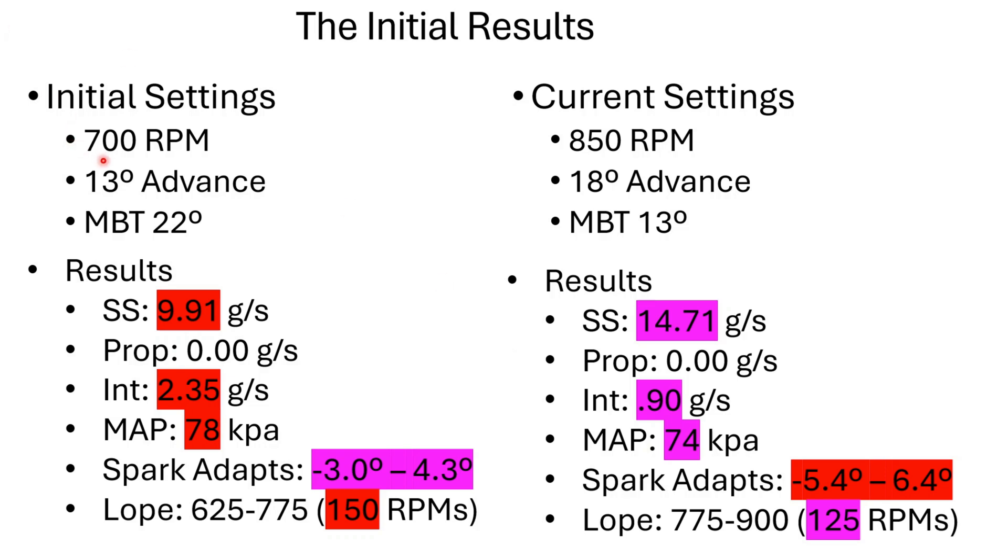So I went in and I changed just the idle area. So this is what happened when I did this. So on the left, initial settings: 700 RPMs, and I bumped that up to 850. The timing advance was pretty low at 13 degrees, I bumped that up to 18 degrees. The torque table, that maximum base torque, was in the idle area 22 degrees, I changed it to 13. So these are the kind of the metrics that I'm looking at to determine if this is positive or negative. So you can see our steady state air went from 9.91 - this is in gear, foot on brake, idling, dead stop - and it bumped us up almost 5 grams per second. Proportional again stays zero, no big change or no big revelation there. But the integral air, you know, again 2.3 to 2.4-ish, dropped down to 0.9 grams per second.